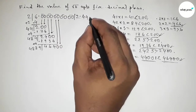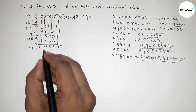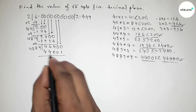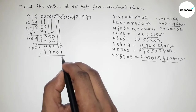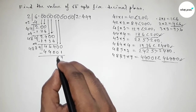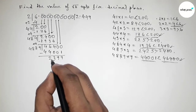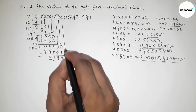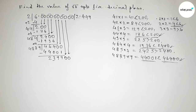Write down 44001. Subtracting: we get remainder digits 9, 9, 9, 3, 2. Bring down the next pair of zeros.